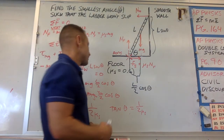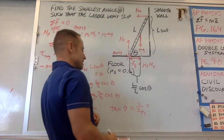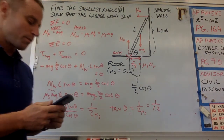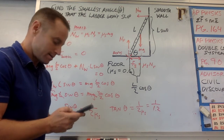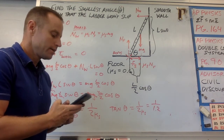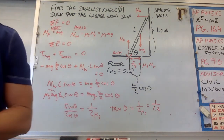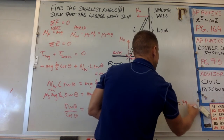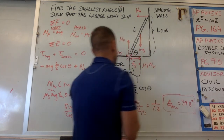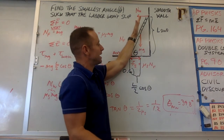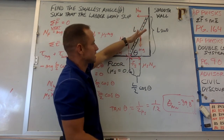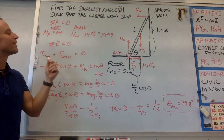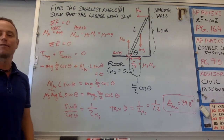For this problem, μs was 0.6, so we need arctan(1/1.2). Computing that gives approximately 39.8 degrees. So θ_min is 39.8 degrees. As long as you keep this angle bigger than that, the ladder will stay. But if you bring the angle down below 39.8 degrees, it's going to fall. That's the classic problem of finding the minimum angle at which you can lean a ladder against a wall and have it stay up.